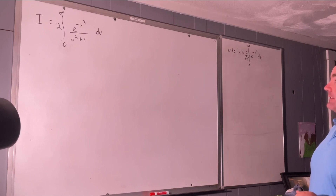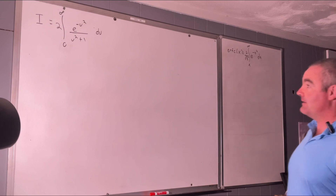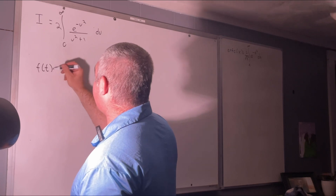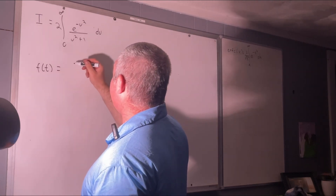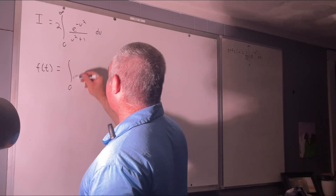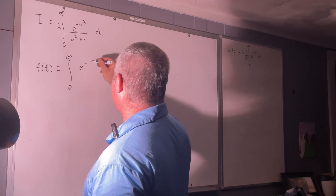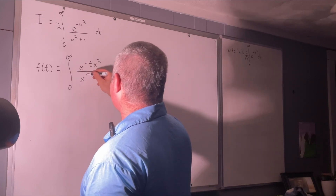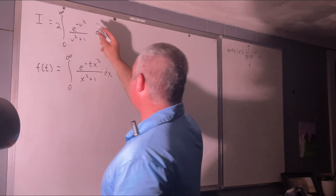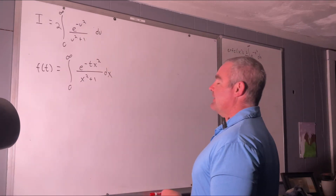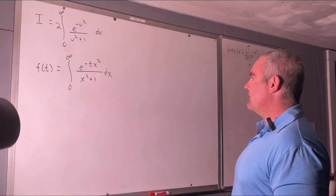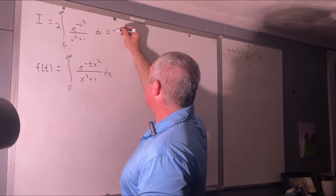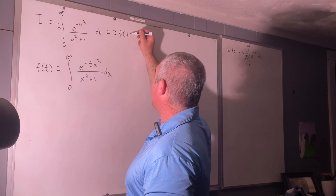The first step in solving this is going to be to re-parameterize it as a function of t. We're going to let f of t equal the integral from 0 to infinity of e to the negative t times x squared over x squared plus 1 dx. Now we can say that i is equal to 2 times f evaluated at 1.